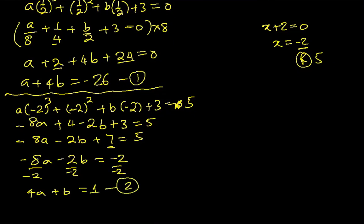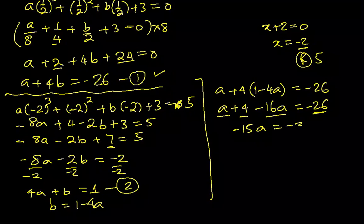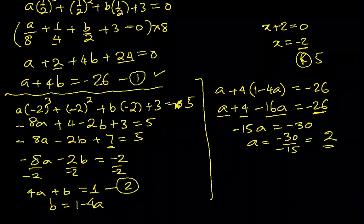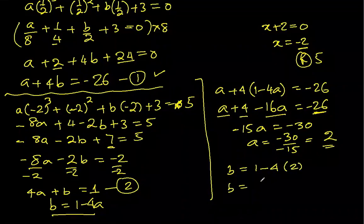This is equation number 2. Let's isolate b here: b equal to 1 minus 4a, so I can substitute in equation number 1. So a plus 4 times (1 minus 4a) equal to -26. So a plus 4 minus 16a equal to -26. So -15a plus 4 equal to -26. We'll get -30 here. a equal to -30 over -15 is positive 2. And b equal to 1 minus 4 times 2, which is 1 minus 8, which is negative 7. We got a and b both.